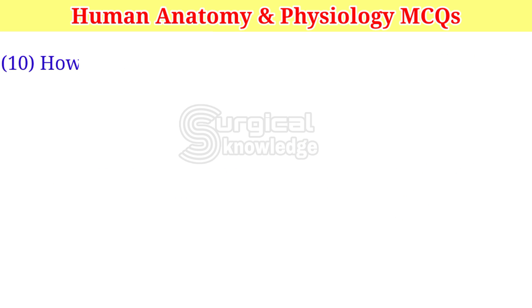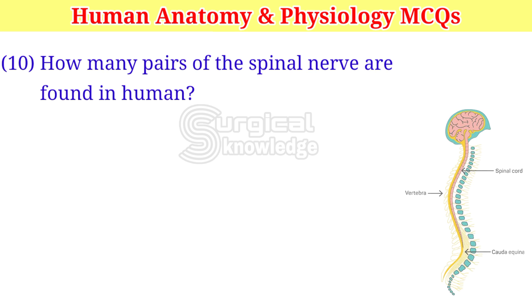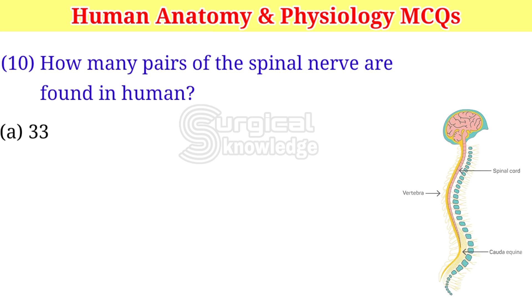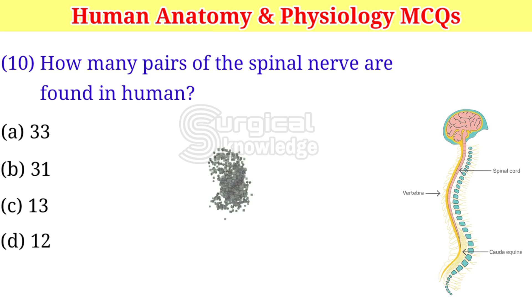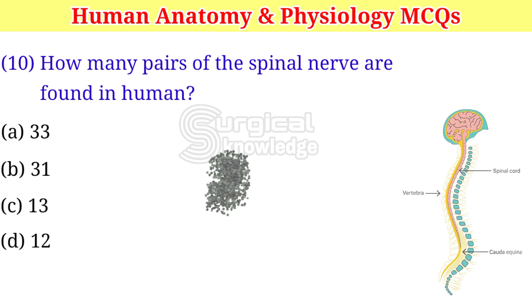How many pairs of spinal nerves are found in humans? A. 33. B. 31. C. 13. D. 12. Right answer is 31.